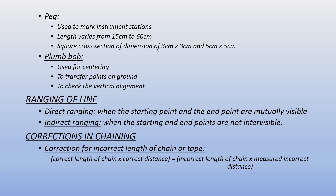Ranging of a line has two types: Direct Ranging and Indirect Ranging. In Direct Ranging, the starting point and end point are mutually intervisible.